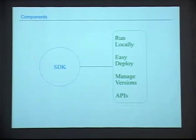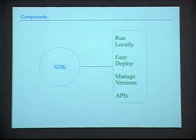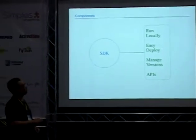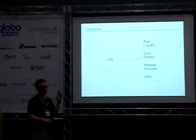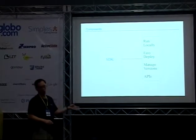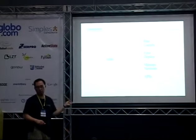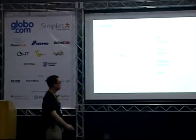The software development kit gives you a local development server, so you can run your server on your development machine and try it out before you upload it live to production. Once you upload it live, it's live to the world. It's easy to deploy your application — you can press a button in the UI or Eclipse, type in your credentials, and it uploads. Or you can do it from the command line. You can also manage your versions — which version should be the default whenever users hit your URL. And then there are lots of different APIs which I'll talk about coming up later.